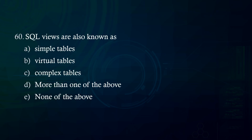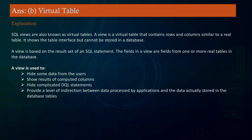SQL views are also known as: A. Simple tables B. Virtual tables C. Complex tables D. More than one of the above E. None of the above. Answer: Virtual tables. Explanation: SQL views are also known as virtual tables. A view is a virtual table containing rows and columns similar to a real table, but cannot be stored in a database. A view is based on the result set of an SQL statement. The fields in a view come from one or more real tables. A view is used to hide data from users, show computed column results, hide complicated SQL statements, and provide indirection between applications and stored data.